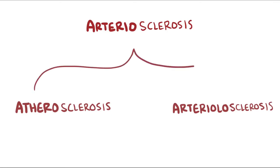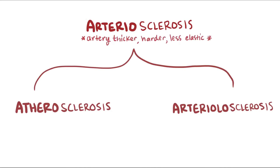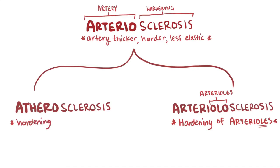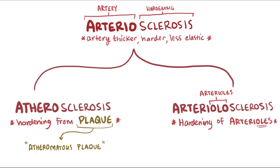Arteriosclerosis is a general umbrella term describing diseases where the wall of the artery becomes thicker, harder, and less elastic than normal — from the Greek arterio, meaning artery, and sclerosis, meaning hardening. Arteriolosclerosis refers to hardening of small arteries and arterioles, indicated by the 'olo' in the middle of the word. Atherosclerosis is the hardening of any artery — usually medium to large sized — caused by the buildup of plaque. These atheromatous plaques occur in the innermost wall of the blood vessel, called the tunica intima or endothelium.